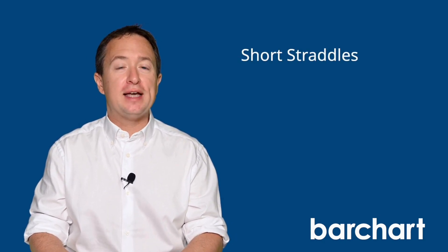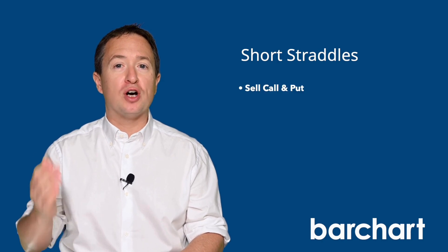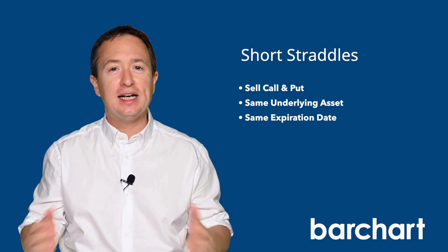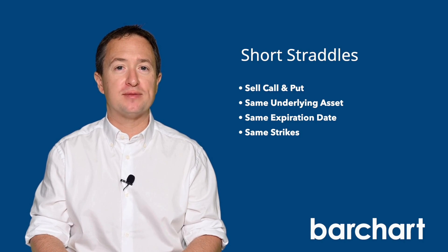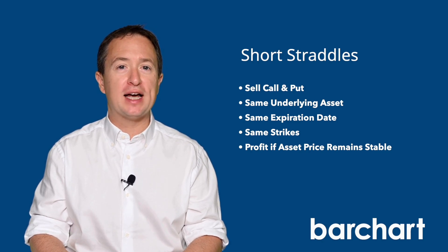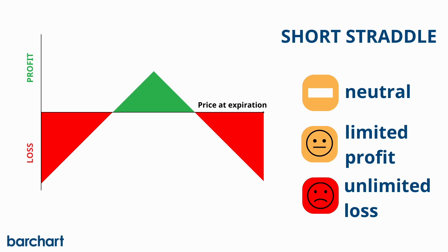A short straddle is a neutral options trading strategy that involves selling both a call and a put on the same underlying asset with identical expiration dates and strike prices. The goal is for the asset's price to remain close to the strike price at expiration. Traders use this strategy when they expect the asset's price to trade within a narrow range. The maximum profit is the premium received, and losses occur if the stock's trading price moves beyond the break-even points in either direction.